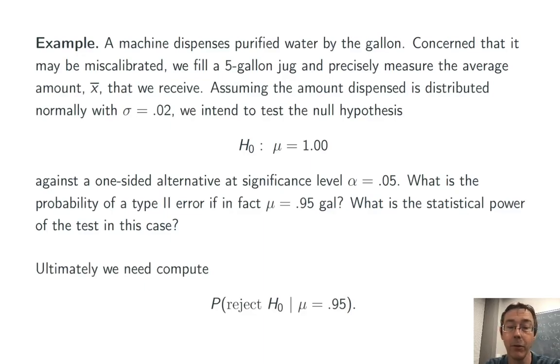Ultimately this is the probability that we want to calculate: The probability of rejecting that null hypothesis, that the average fill of the machine is 1 gallon, under the specific circumstance that it's actually giving out 0.95 gallons on average. So this is a probability we will be able to calculate.